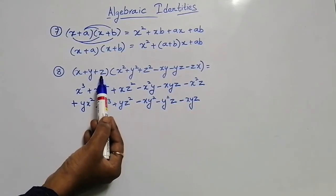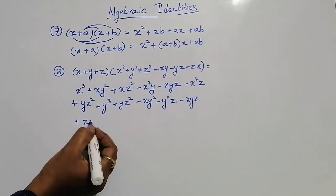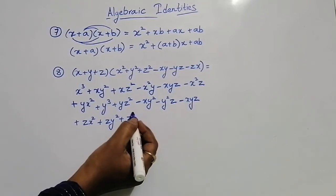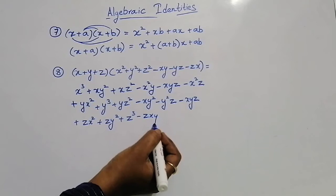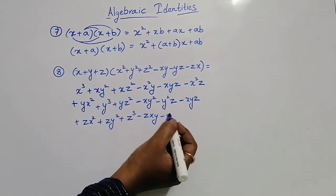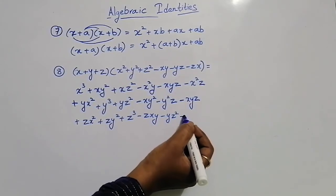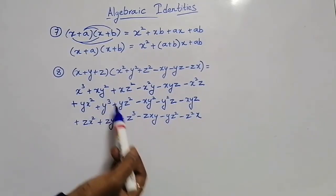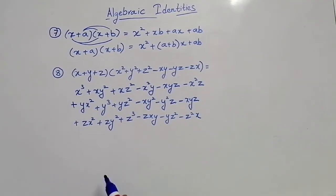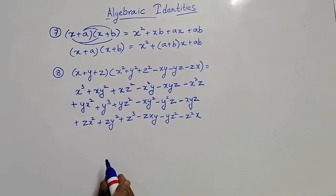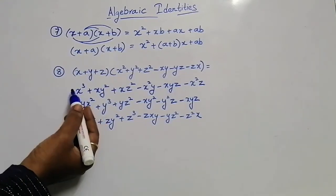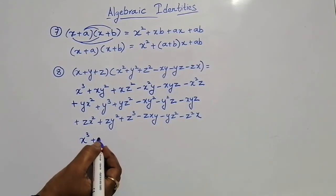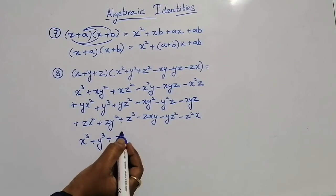Now multiplying z with all these terms: plus z into x square gives plus zx square, plus z into y square gives plus zy square, plus z into z square gives plus z cube, plus z into minus xy gives minus zxy, plus z into minus yz gives minus yz square, plus z into minus zx gives minus z square x. This is the full expanded expression. Now observe the like terms — first I am going to write all the cube terms: x cube plus y cube plus z cube.